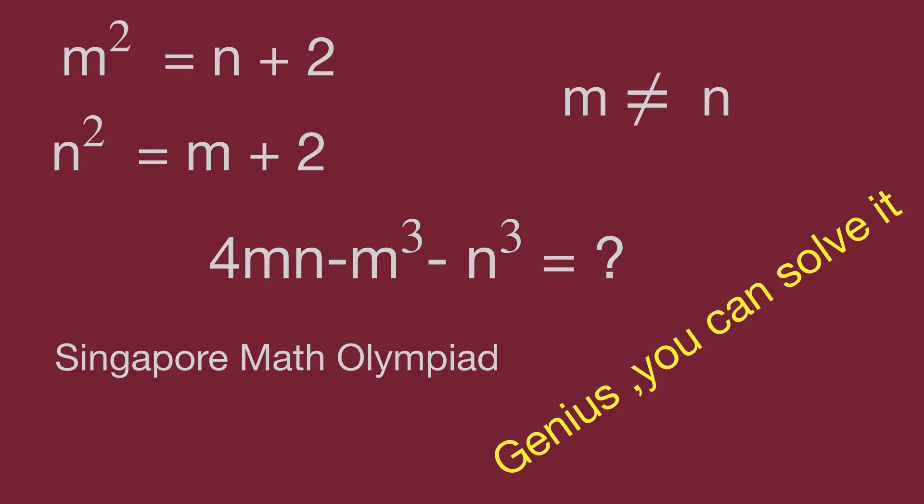The given information is m squared equal to m plus 2 and n squared equal to m plus 2, and m not equal to n. Find the value for mn plus m cubed plus n cubed.